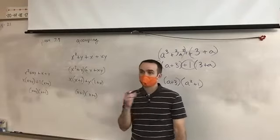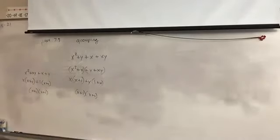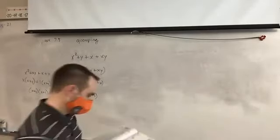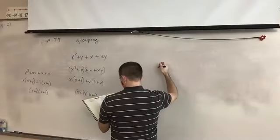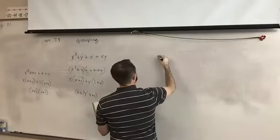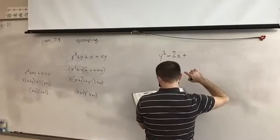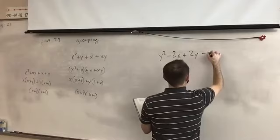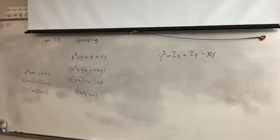One more, because I need to point something out, and then we'll be done with the new stuff. The expression is negative two x plus two y minus xy. Go ahead and group it, see what we can do. Remember: if there's a negative and you're moving terms around, that negative belongs to the term after it.